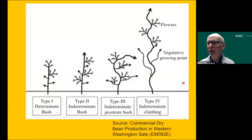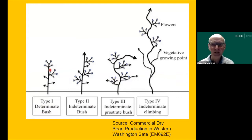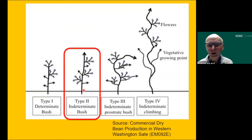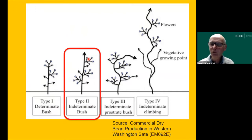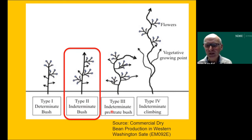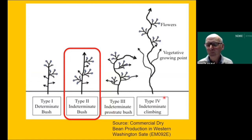Now I want to talk a little bit about the types of beans. We have a Type 1 determinant bush bean which starts to flower all at the same time — that is not what we typically have in our region. We typically have Type 2, where vegetative growth and flowering take place simultaneously. Under good conditions you'll see flowering even in the top part of the plant, but it is more of a bush. Most breeders have moved toward a more erect plant that can be direct harvested — a Type 2 bean compared to the Type 3, which is a floppy bush. The older pinto beans would become large, lay down, and needed undercutting for harvest. On the right you see a climbing Type 4 bean, more like the tall beans growing in a garden.